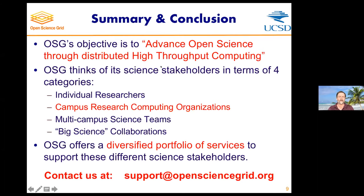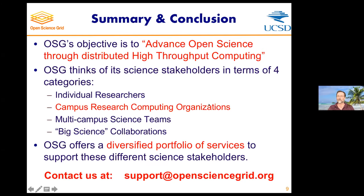This brings me to the end of my talk. OSG's objective is to advance open science through distributed high-throughput computing. We find it useful to think of our customer portfolio in terms of four types of categories, which we went through this morning. We provide a diversity portfolio of services to support all these different kinds of people. If you want more details than you get today and tomorrow, send email to support at opensciencegrid.org. Thank you very much.